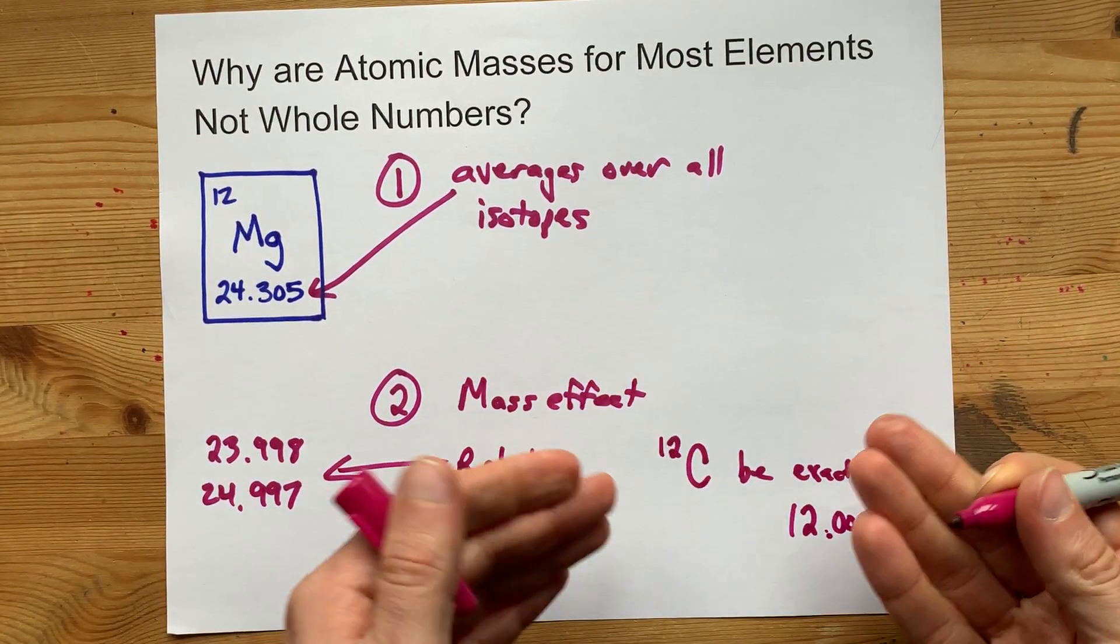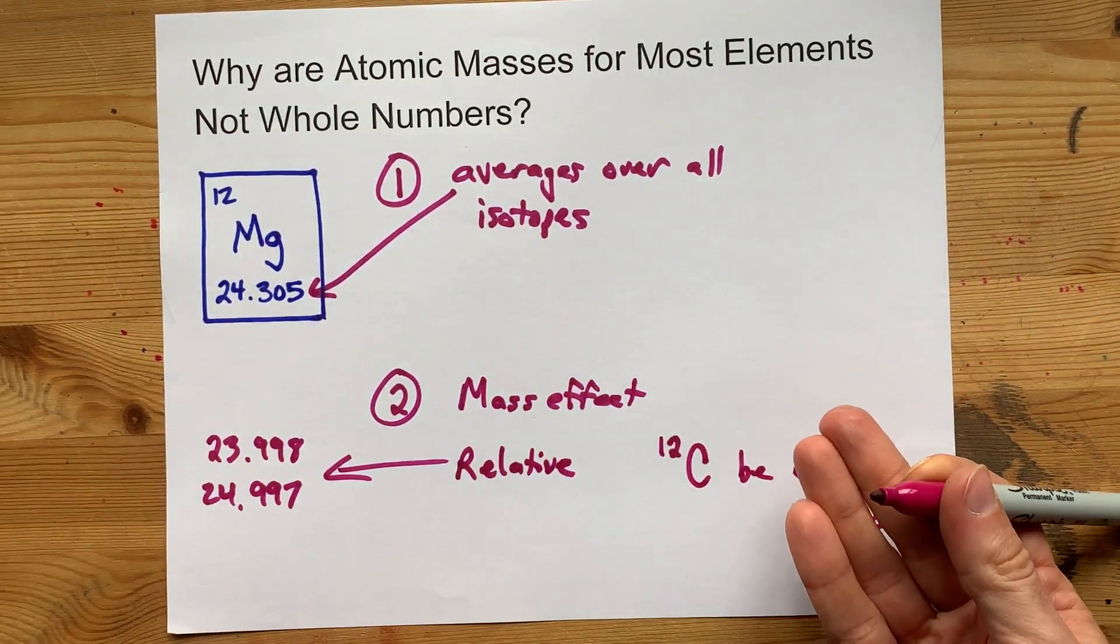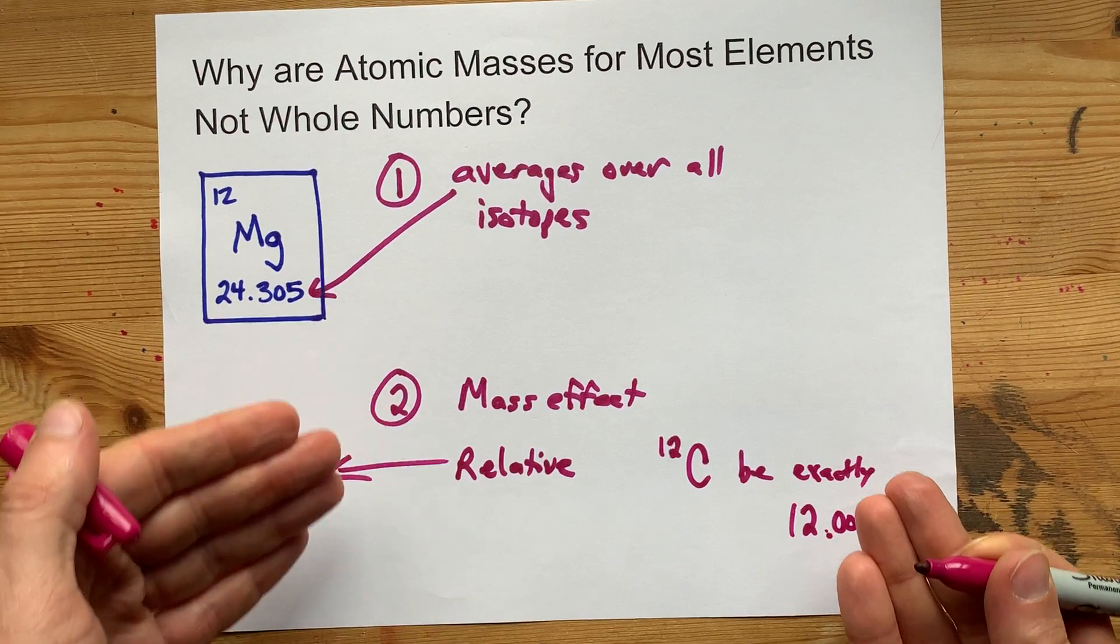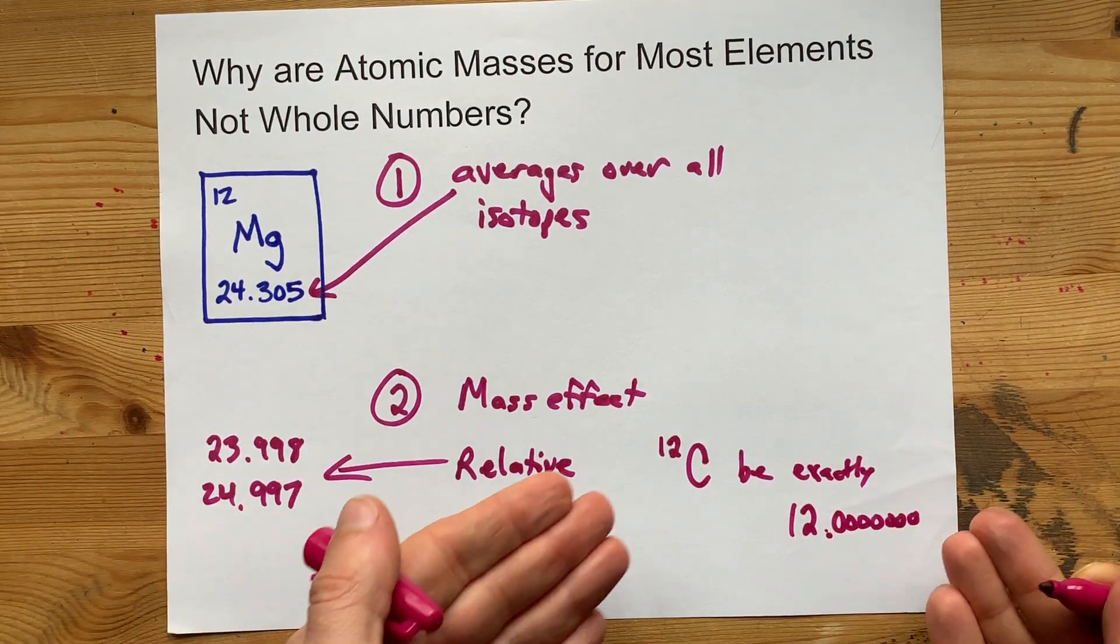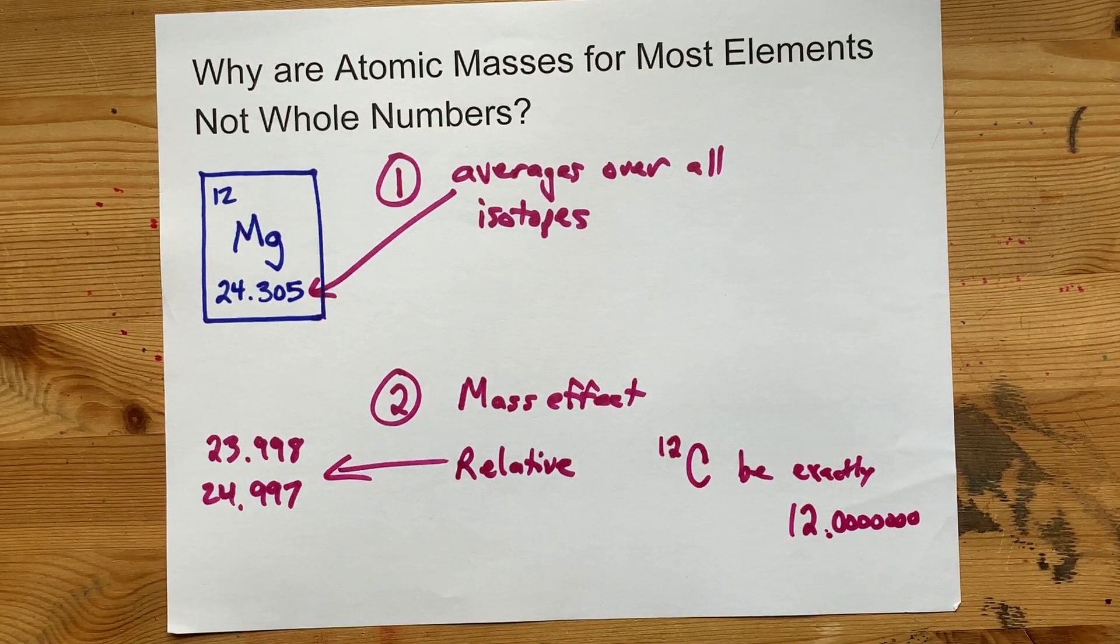But then everything else is going to be based off of that. And again, because you're changing the number of protons here, the number of neutrons there, you're not going to get exactly 0.000000 when you combine them in different ways.